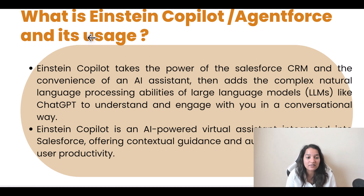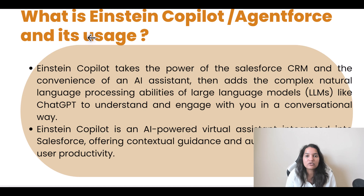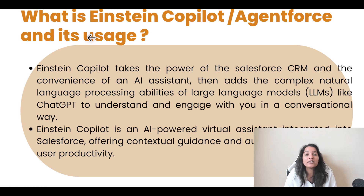Einstein Copilot is an AI-powered virtual assistant integrated into Salesforce, offering contextual guidance and automation to optimize user productivity. The response it gives you is within context - if you remember when we were playing around with Einstein Copilot in the previous tutorial, not every time do we have to give the context. It understood where the conversation was coming from, what the user was asking, and figured out the response in that context. That is what Einstein Copilot is - the virtual AI assistant that performs actions or tasks for you.